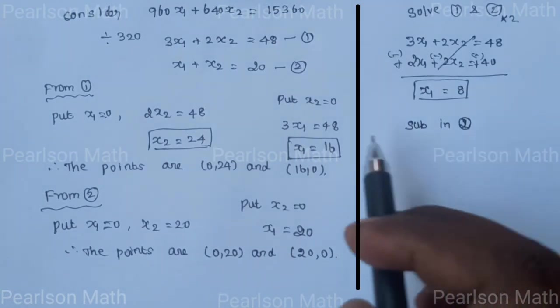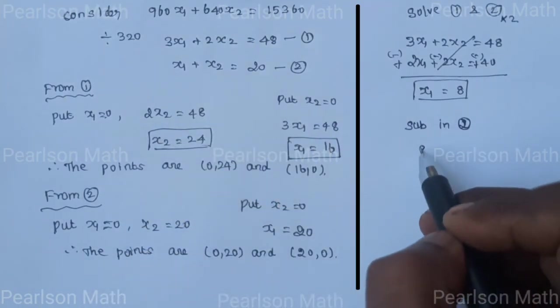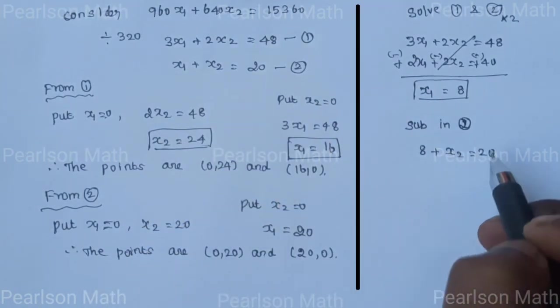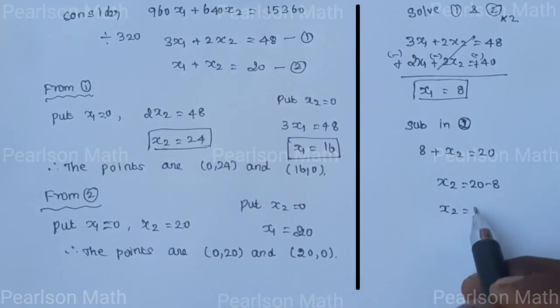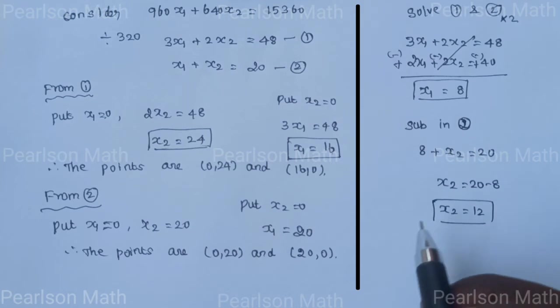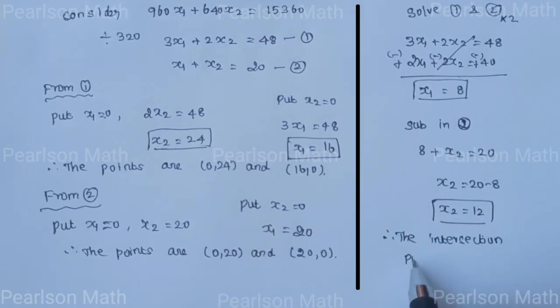Substitute x₁ equals 8 in the second equation: 8 plus x₂ equals 20, so x₂ equals 12. Therefore, the intersection point is (8, 12).